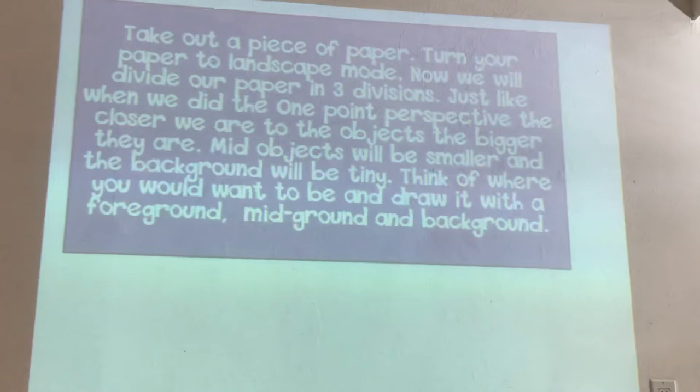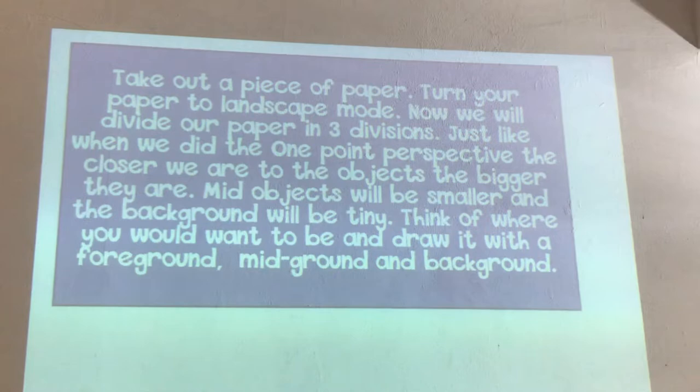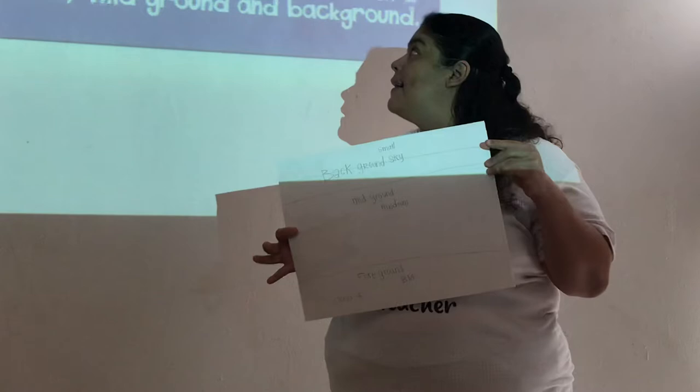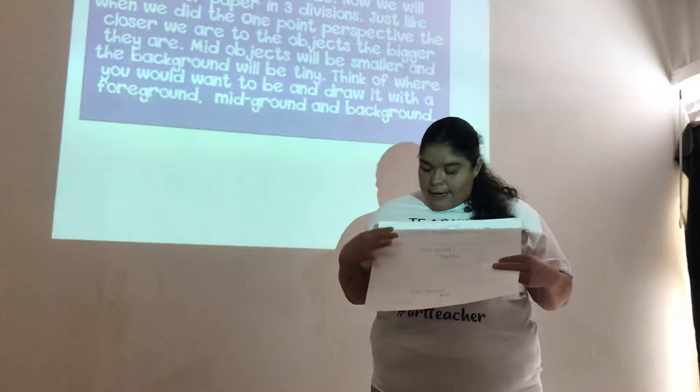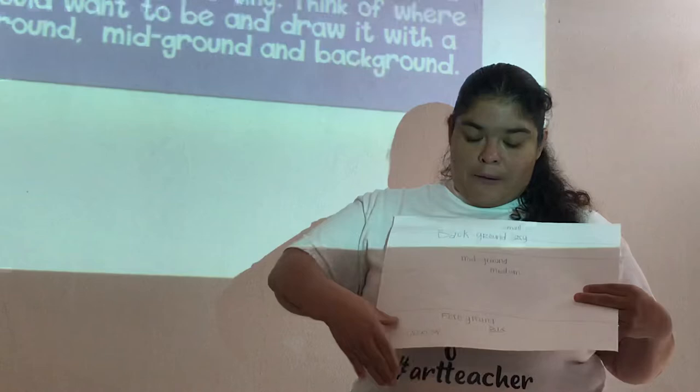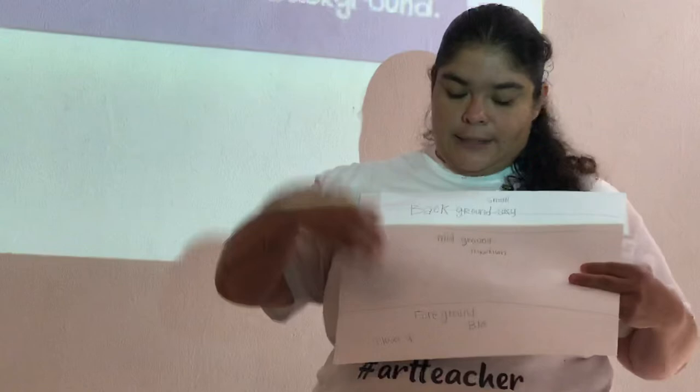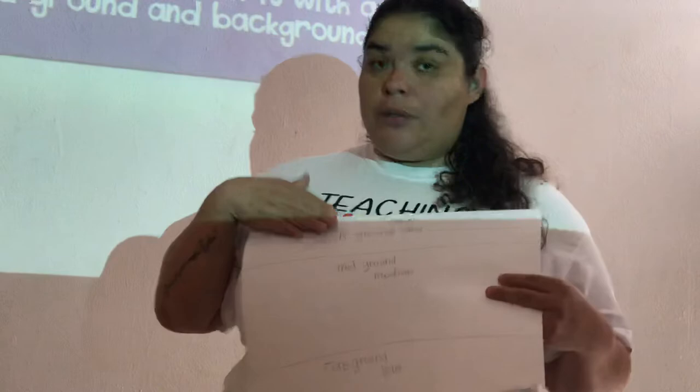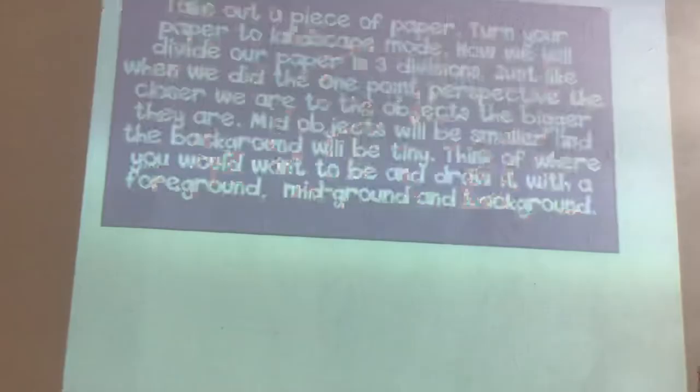You're going to take out a piece of paper. It does not matter if it's lined paper or white paper, whatever you have at home. You're going to turn your paper into landscape mode — not portrait, landscape. Then we will divide our paper. My foreground is down here at the bottom; that's where my bigger objects go. My middle ground is in the middle of the paper. And then the background is on the very top — your sky or whatever you're going to use for your background.